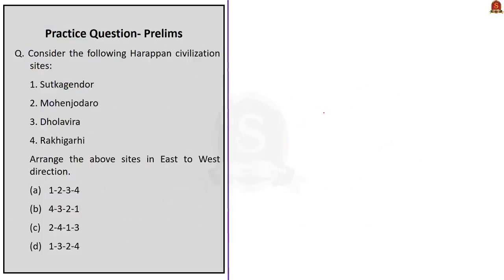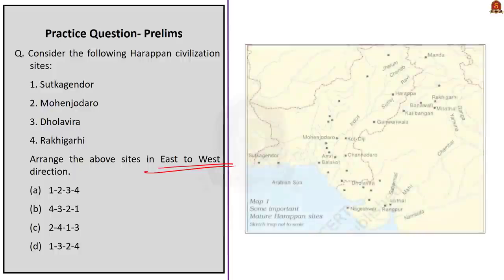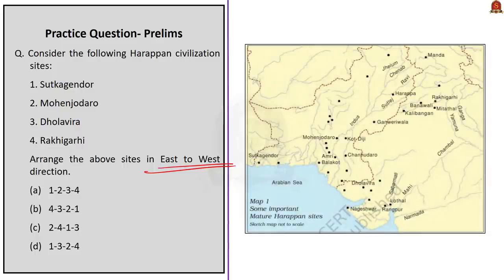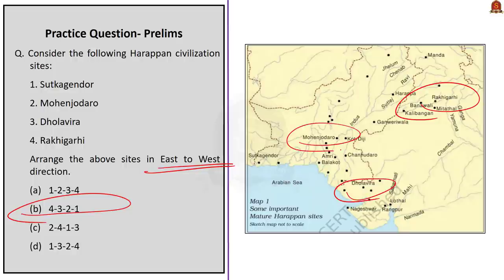Fourth question regarding Harappan civilization sites and their arrangement on a map. From observing the map, the correct answer is Option B — the order is 4, 3, 2, 1: Rakhigarhi first, then Dholavira, then Mohenjo-daro, and finally Sutkagen-dor.